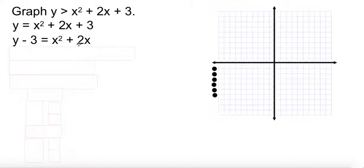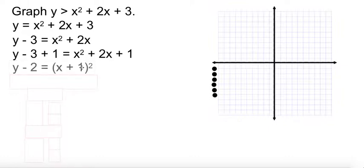So we'll subtract the 3 over. 2 divided by 2 is 1, 1 squared is 1, so we'll add 1 to both sides. Factor the right and combine on the left. And then bring the 2 over.